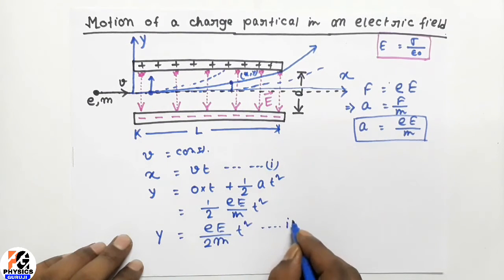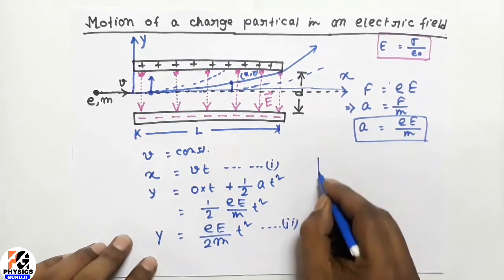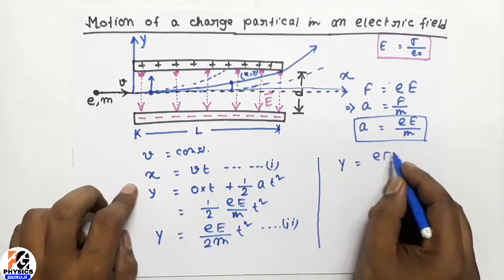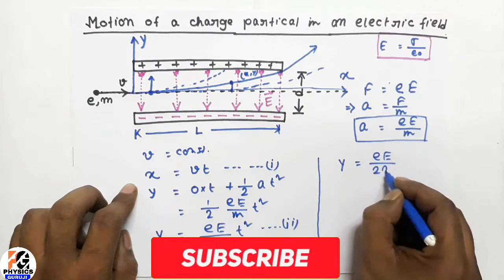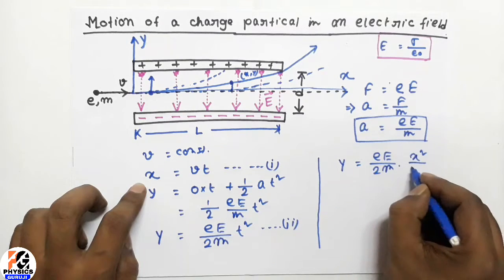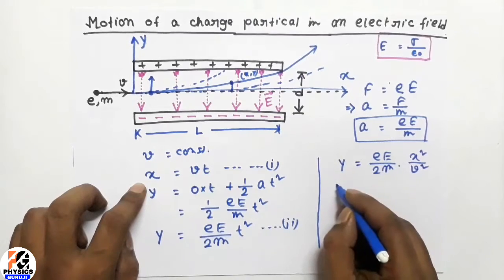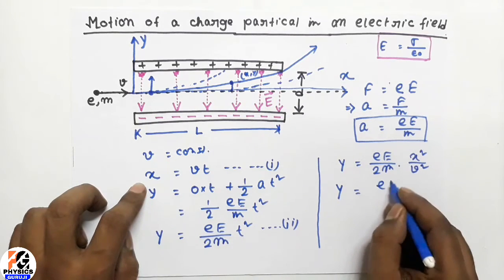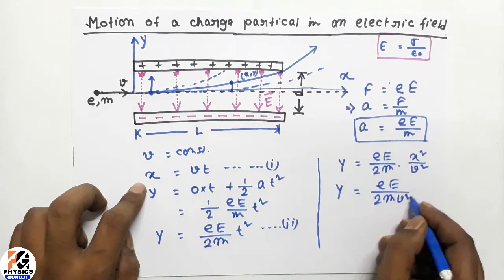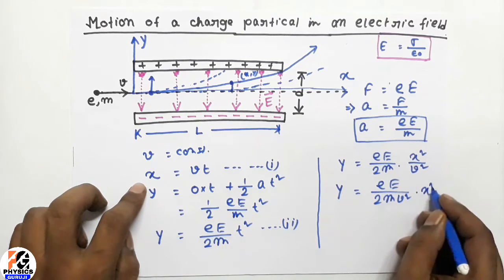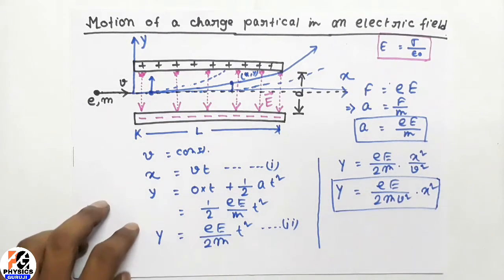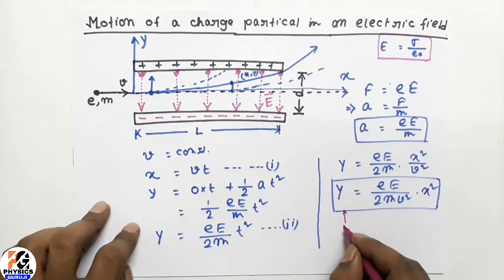Now, combining both equations, we substitute t equals x by v into equation 2, giving y equal to eE by 2m times x squared by v squared. So the path of the electron is y equal to (eE by 2mv²) times x squared. This is the equation of the path of the electron, and we can see that the path is a parabola.